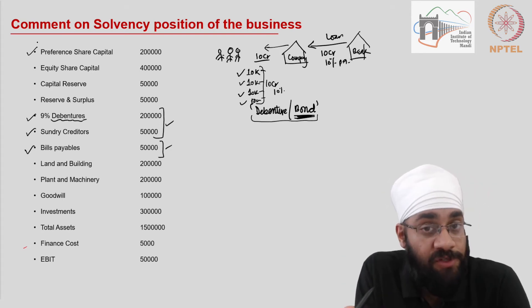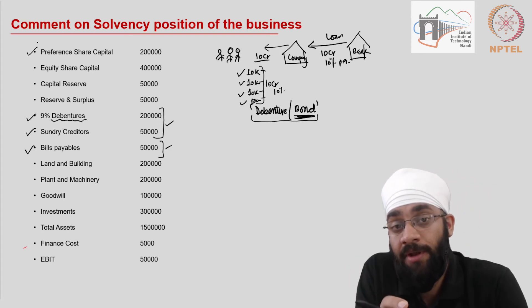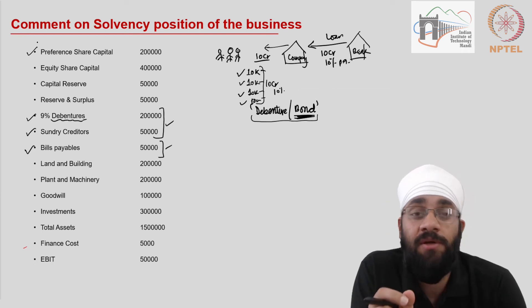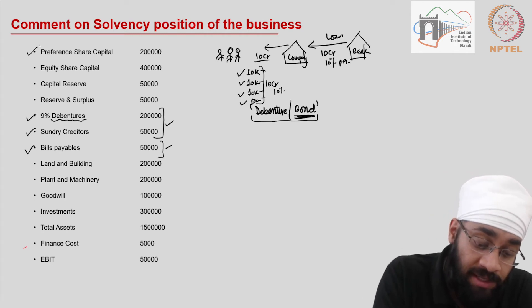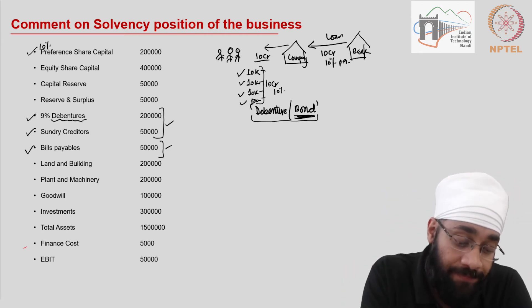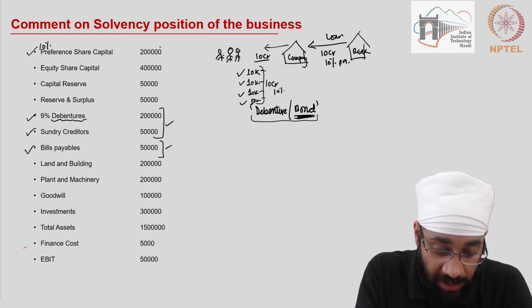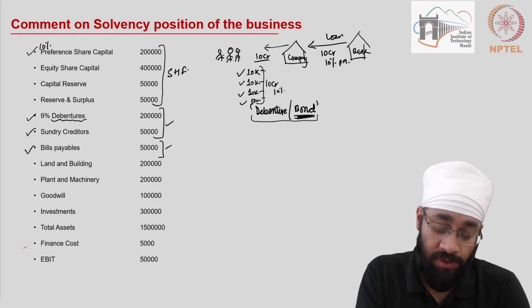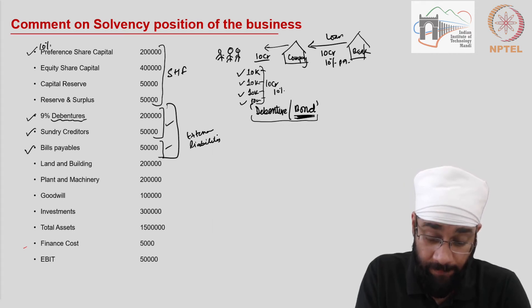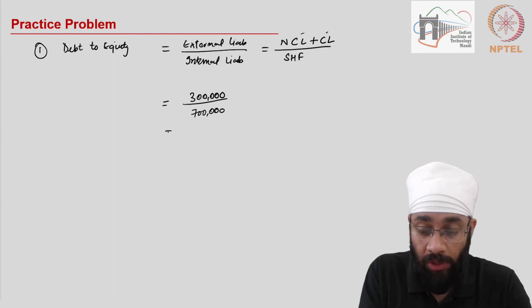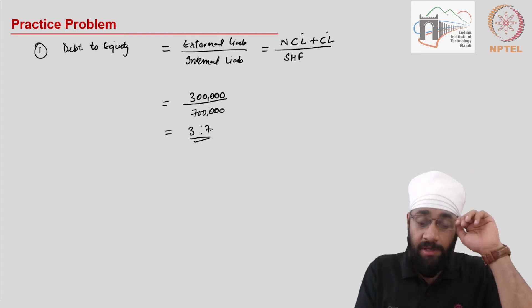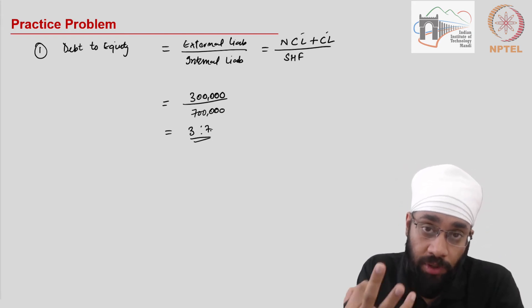The preference share capital—I've discussed preference share capital before—it's same as share capital but the shareholders of preference shares enjoy certain preferential treatment in distribution of profit. One example is that they have a fixed return, fixed dividend, just like debentures as well. Preference share capital plus equity share capital plus all the reserves is what is going to make shareholders fund, and this is the external liabilities. Total shareholder funds comes out to be 7 lakhs. The debt to equity ratio is 3 is to 7.